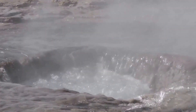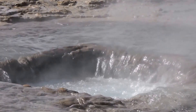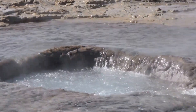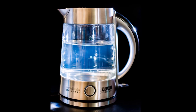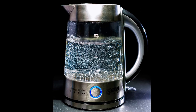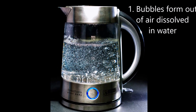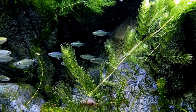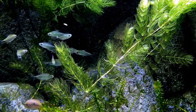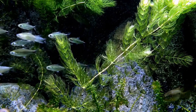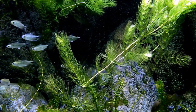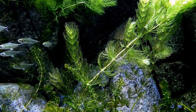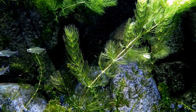Why do bubbles form in boiling water? Two types of bubbles actually form in boiling water. The first type forms when the water starts to get hot — these bubbles are air. Water has air dissolved in it, and it is this air that is used by fish and other water animals to breathe. As the water's temperature rises, the solubility of air decreases and the air escapes from the water as bubbles.